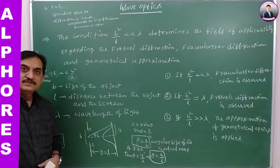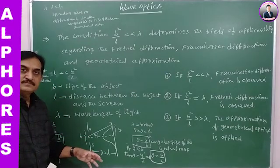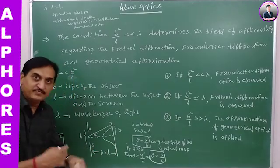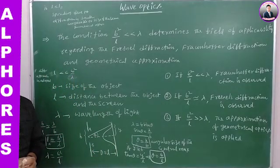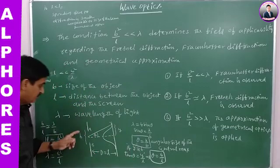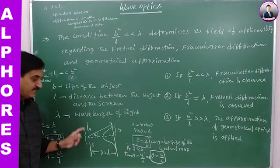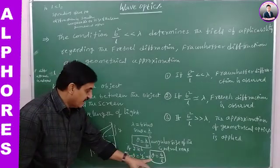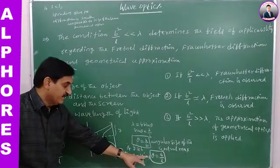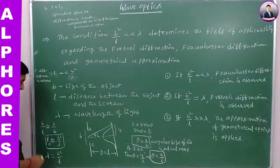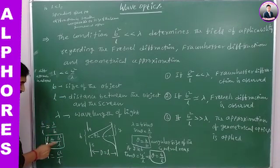We are taking that the spreading of light Y is nearly equal to the size of the obstacle B. By putting Y equal to B, we get theta equal to B by L. Setting these two expressions for theta equal to each other: B by L equals lambda by B, which gives L equals B squared by lambda.